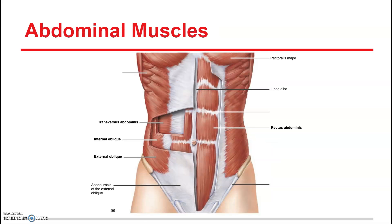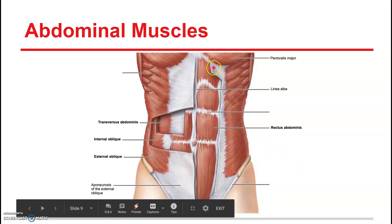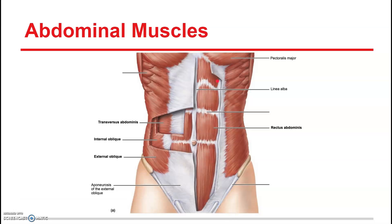Now we're moving down to the abdominal muscles. There's the rectus abdominis, which forms the six-pack muscles. In between the rectus abdominis muscles is connective tissue called the linea alba. I mention this because sometimes when people are pregnant, that tissue separates — that's called rectus diastasis. When that tissue separates it can lead to intestines making their way out, causing a hernia. It also causes back pain and affects muscle strength and balance on either side.